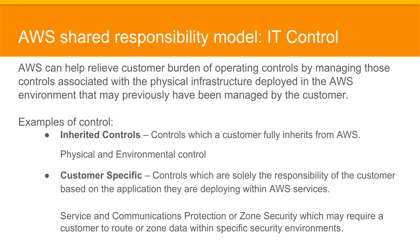There are some examples of controls managed by AWS, customers, or both. First, there are inherited controls — the controls which a customer fully inherits from Amazon Web Services. These are physical and environmental controls.